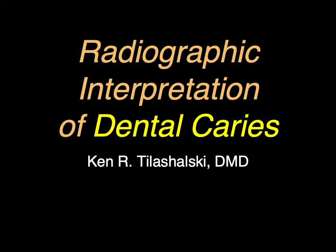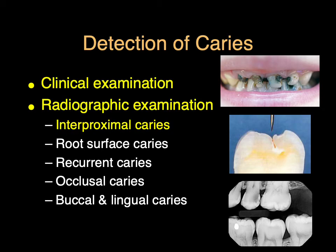Let's do a review of radiographic interpretation for dental decay. The two primary modes of detection for caries are clinical examination. We can see gross decay, but we also use an explorer to feel within pits and fissures and see if there's any tugback that might indicate early decay that might lead into something more significant below the enamel surface.